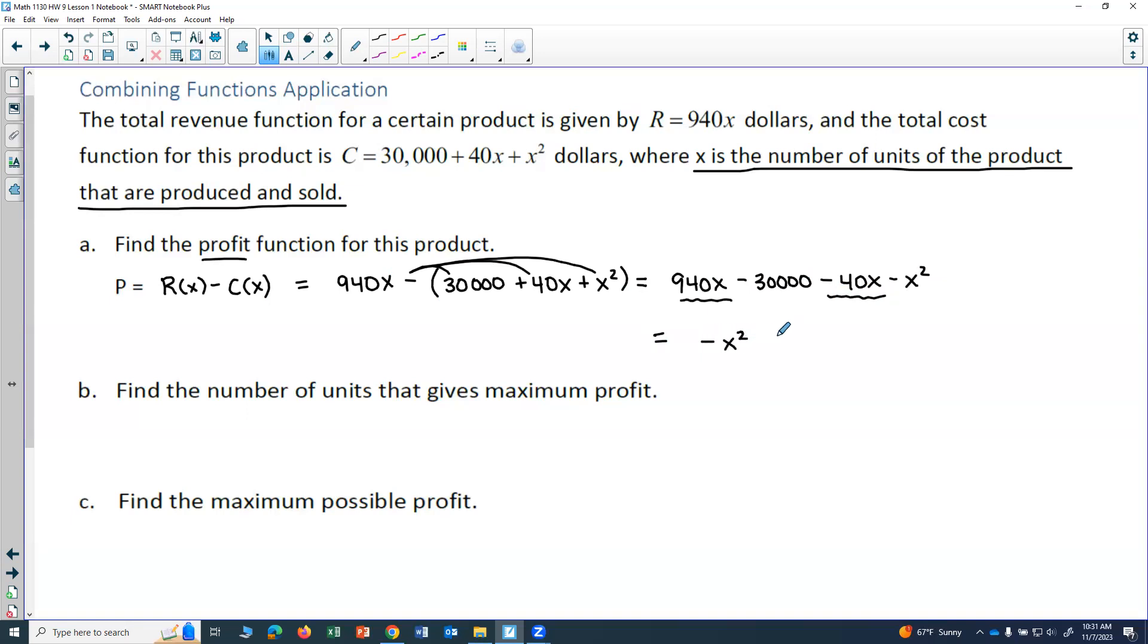So I'll go ahead and write this in decreasing order of exponents. So I'm going to put the -x² first. Negative x squared. 940x - 40x would give me a +900x, combining those like terms, and then -30,000. So that is my profit. That would be my P(x).